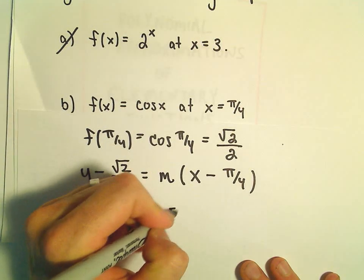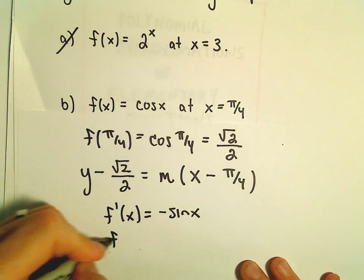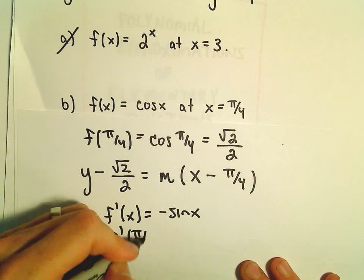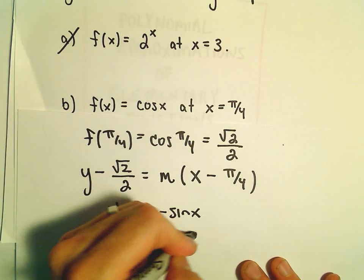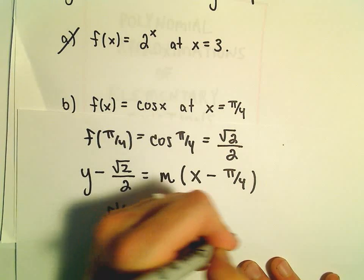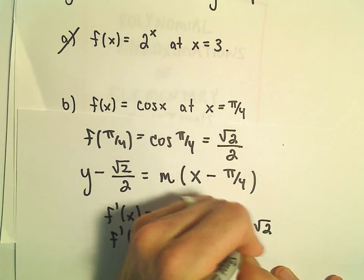The derivative of cosine is negative sine x. If we plug in π/4, we get negative sine of π/4, which is -√2/2.